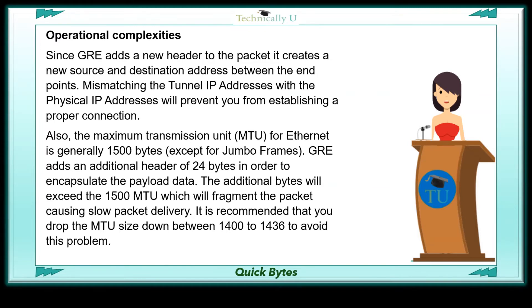Operational Complexities. Since GRE adds a new header to the packet it creates a new source and destination address between the endpoints. Mismatching the tunnel IP addresses with the physical IP addresses will prevent you from establishing a proper connection.